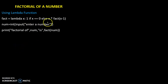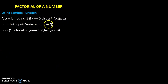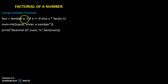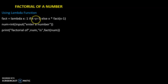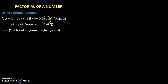We have done factorial in two ways. First, we calculate using a lambda function. The lambda function is recursive — fact equals lambda x: 1 if x equals 0, else x into fact of x minus 1. If x value is 0, it returns 1. With the number 5, the same function is called recursively.